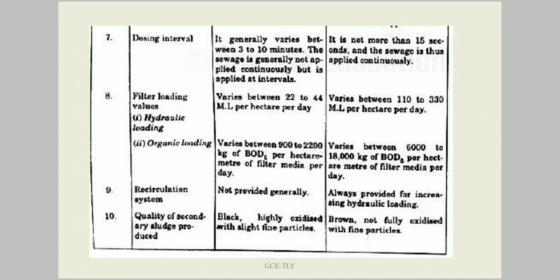The filter loading values show that hydraulic loading varies from 22 to 44 ML per hectare per day for conventional filters and 110 to 330 for high rate filters. Organic loading varies from 900 to 2200 for conventional trickling filter and 6000 to 18,000 kg of BOD per hectare-meter of filter media per day for high rate trickling filter. Recirculation is not provided in conventional trickling filter but is always provided in high rate trickling filter.